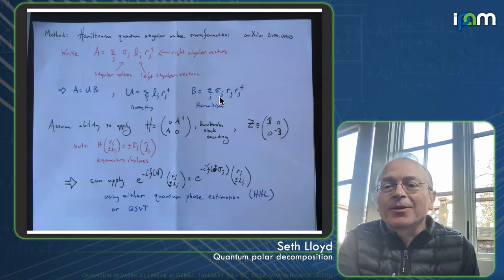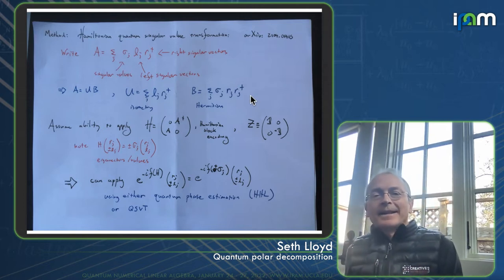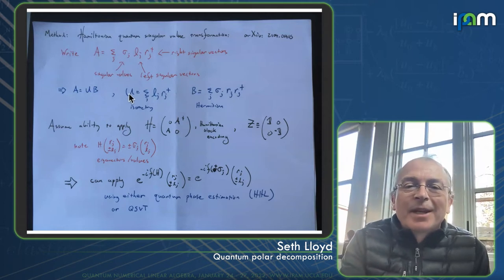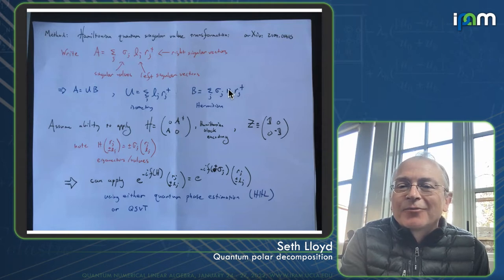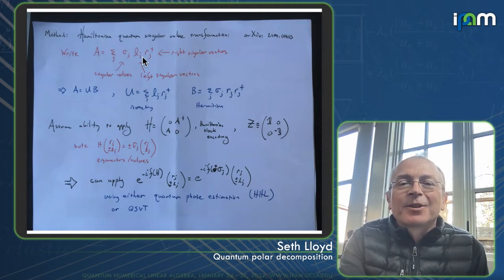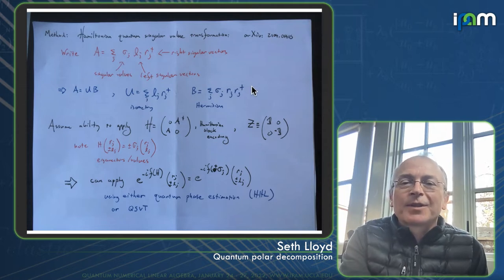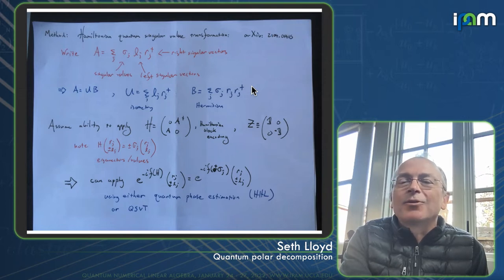Indeed, the isometry U is just a sum over j, Lj, Rj dagger, which given that Lj is an orthonormal set, Rj is an orthonormal set, you can see right away that this is actually an isometry or unitary if A is square. And B, this Hermitian matrix is just a sum over the singular values, sigma j, Rj, Rj dagger, which is patently Hermitian. And you can also see right away, if you take this U and you multiply it by B, then these Rj's give a little delta function with those Rj's, and you just get A is equal to sigma j, Lj, Rj dagger. So I hope this is reasonable. This is just rewriting everything in terms of the ubiquitous singular value decomposition.